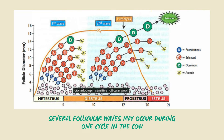The dominant follicle of each wave will ovulate if luteolysis occurs. After luteolysis, follicles of either the second or third wave develop into a dominant pre-ovulatory follicle. One or more of these follicles will mature into the pre-ovulatory and dominant follicle. The endocrine condition for final follicular development will exist only after luteolysis and the subsequent decline in progesterone that removes the negative feedback on the hypothalamus. Additionally, different species and within species have different numbers of follicular waves during a particular cycle.